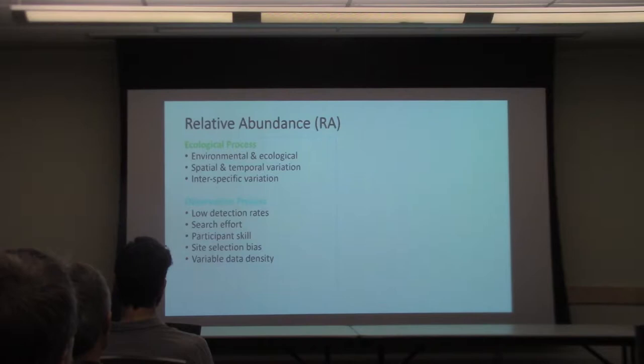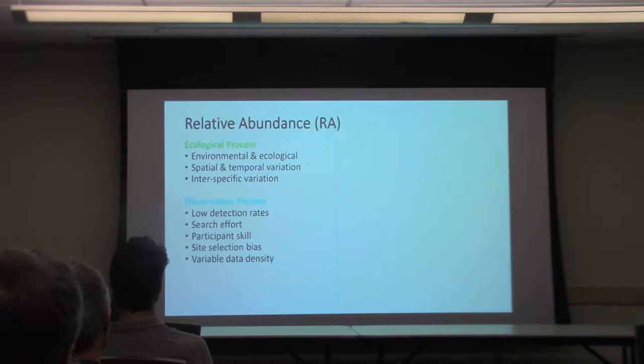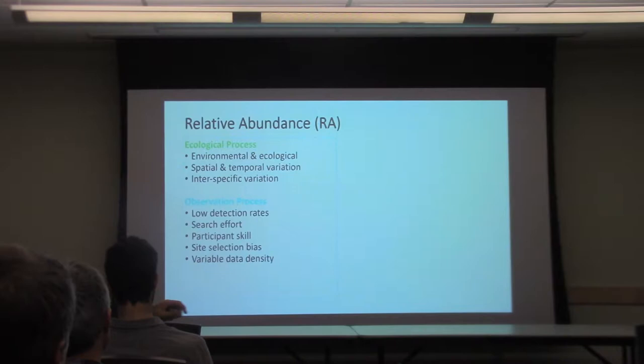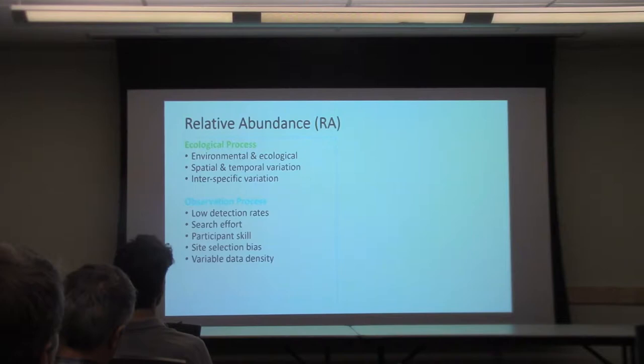When you work with citizen science data, there are a lot of challenges that get really magnified. There are essentially two grand processes that create this data: the ecological process — that's environmental factors like habitat — and spatial and temporal factors, which matter especially when we think about migratory birds. Migratory species are in different places at different times of the year and often in different concentrations.